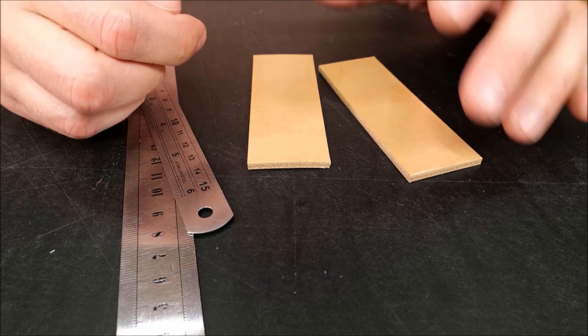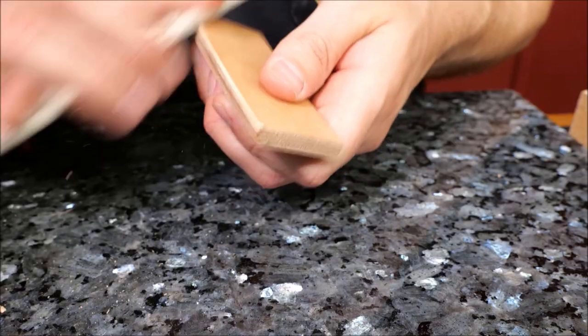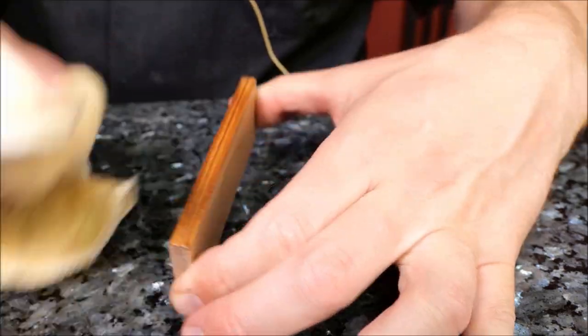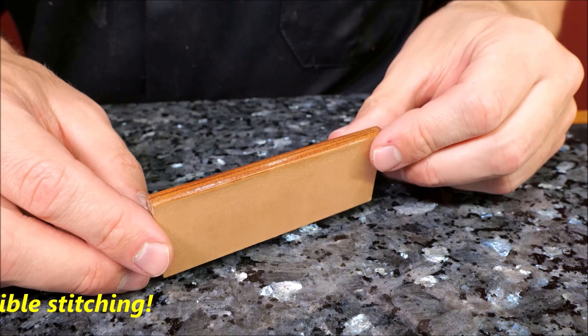And how to create the blind centre stitch. An invisible seam that can't be seen either side, which means longer lasting products that allow the eyes to focus solely on the beauty of the leather.